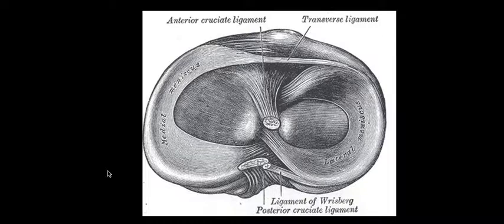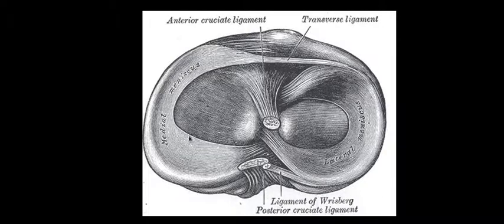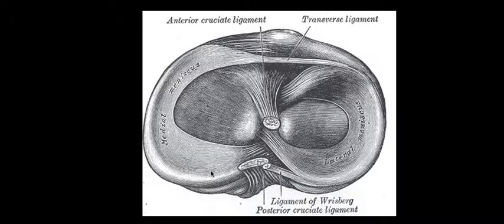Starting with the medial meniscus — this is an example of a right knee viewed from above. We see the medial meniscus has a C-shaped or broad configuration. It's larger than the lateral meniscus, bigger and more broad-based. As we go anterior it's more narrow, and as we move posterior it's a little bit wider. That width variation is an anatomical landmark to identify what aspect we're looking at on a single MRI slice. We have the anterior horn, the body, and the posterior horn.